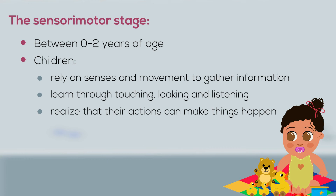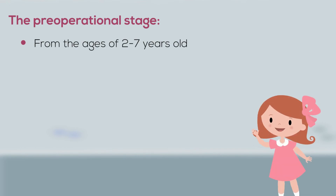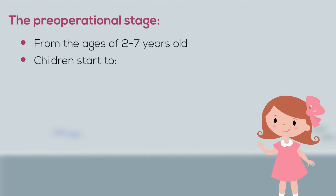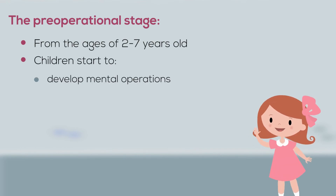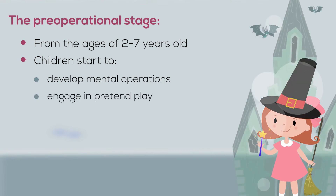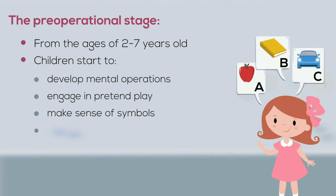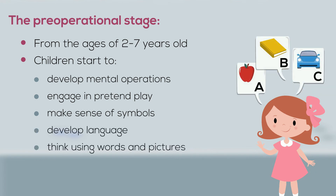At the pre-operational stage of development, from the ages of two to seven years old, children start to develop their mental operations, engage in pretend play, and begin to make sense of symbols to interpret objects. They begin to develop language and thinking using words and pictures.